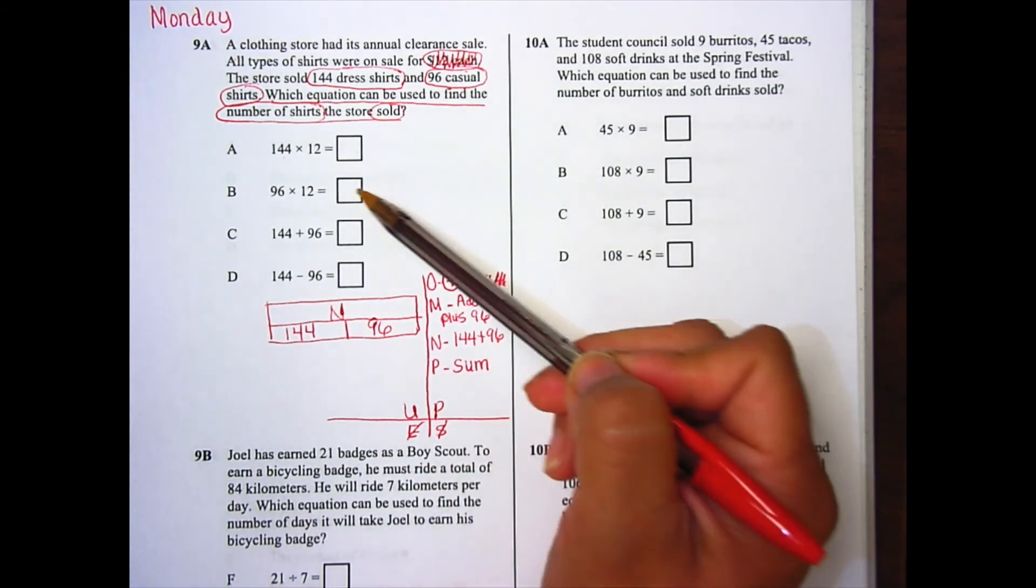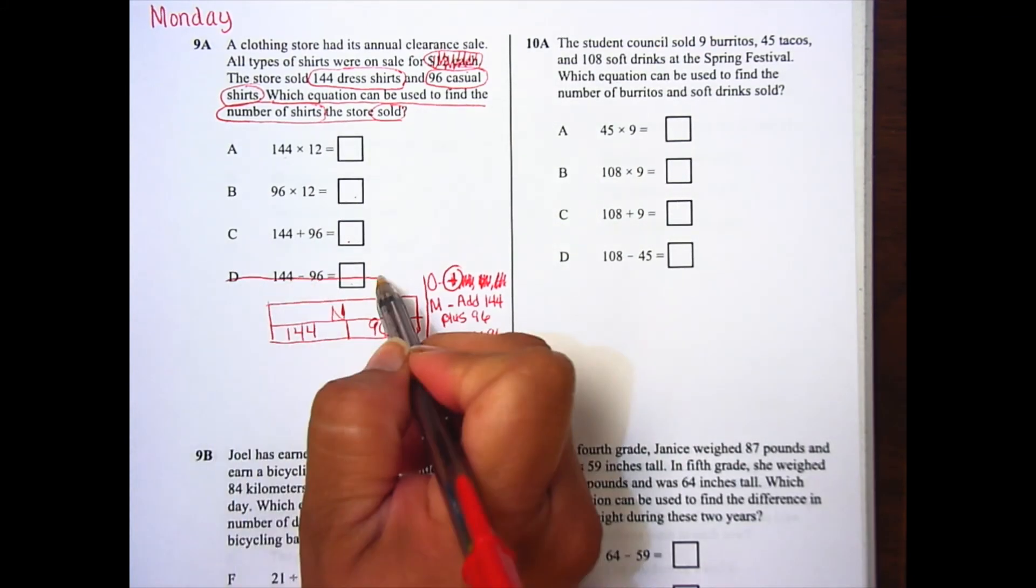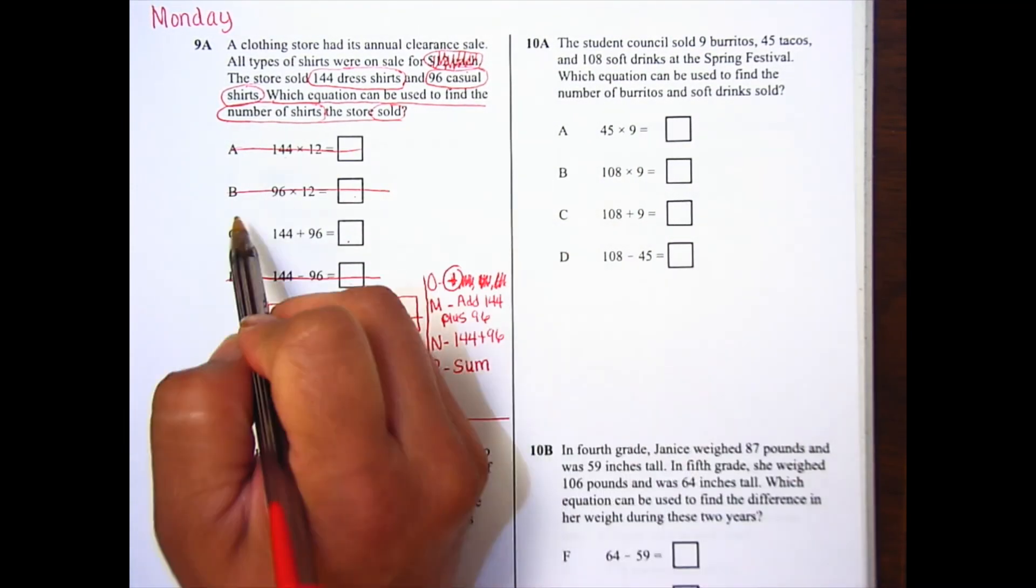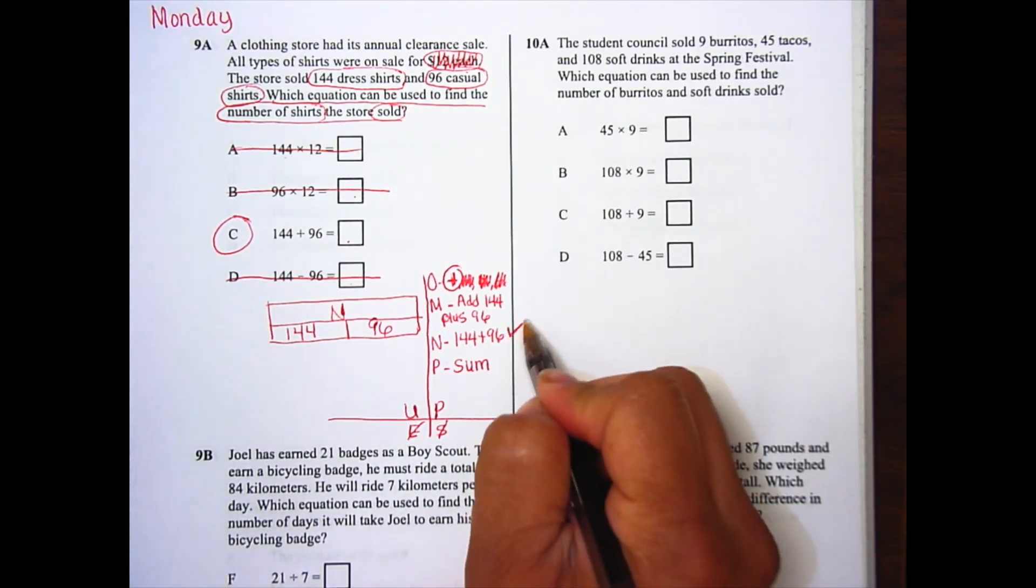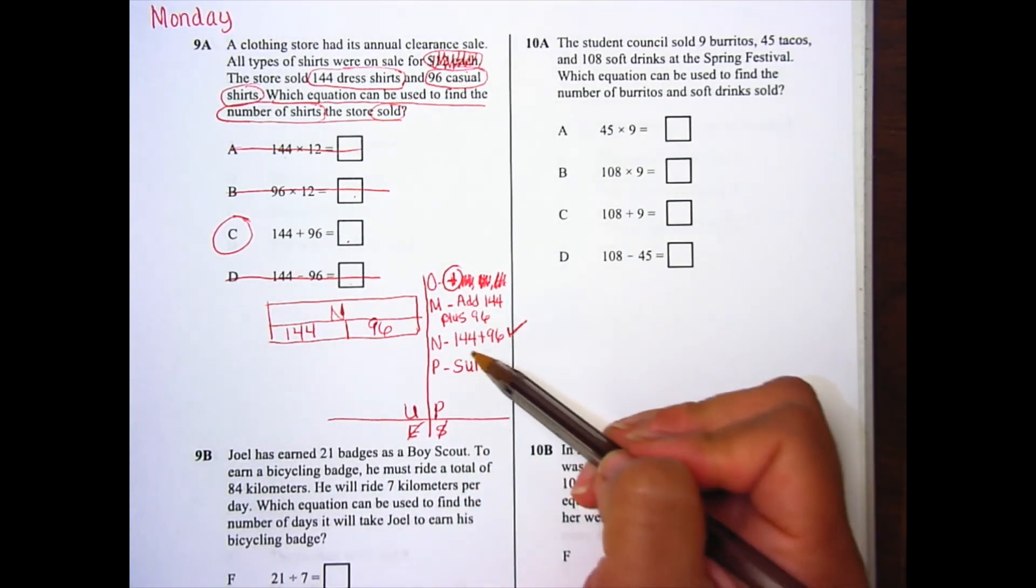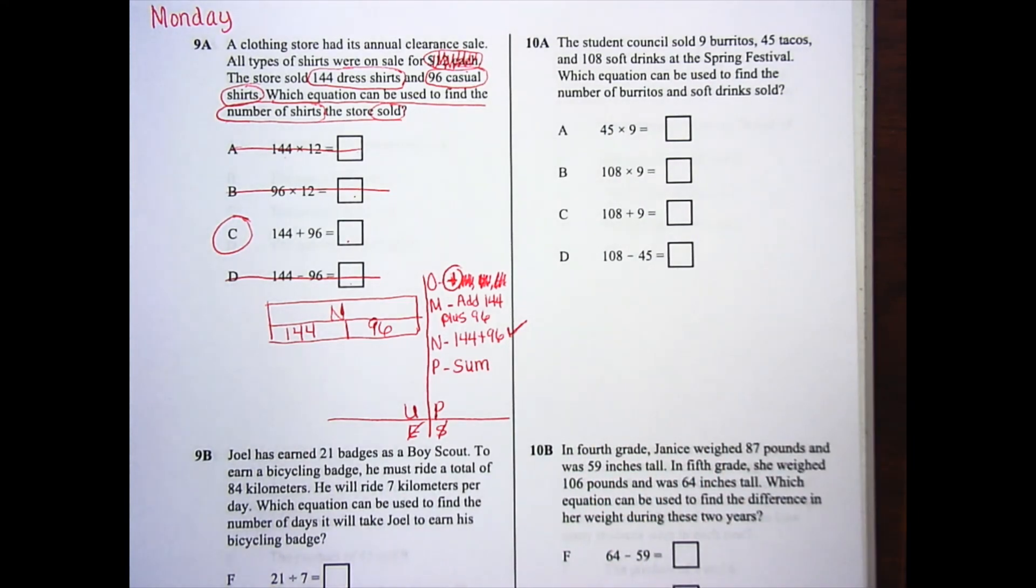So if I look at my answer choices, we already said we know we're not subtracting. We're not multiplying. My answer is C. And here it is on my number sentence, 144 plus 96. Go ahead and work on 9B using the understand and plan.